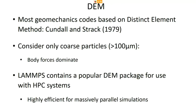In a real dam, a rock-fill till could easily have a ratio of maximum to minimum radii of 10,000 — polydispersity clearly controls the behavior and we would like to model it efficiently. Most DEM codes, including the one in LAMMPS based on the distinct element method from Cundall and Strack, typically consider coarse particles greater than 100 microns where body forces dominate. LAMMPS contains a popular DEM package which is very efficient for massively parallel simulations, making granular LAMMPS an extremely good DEM package for Archer.